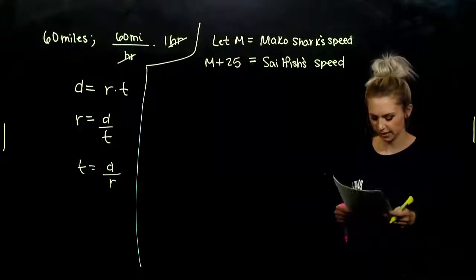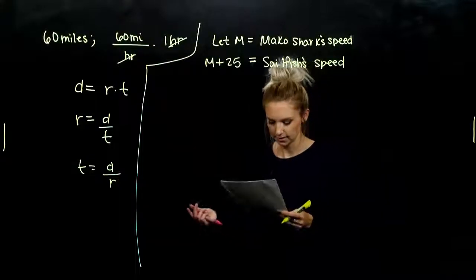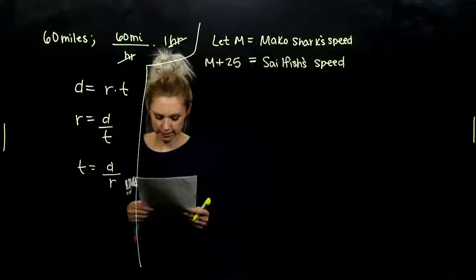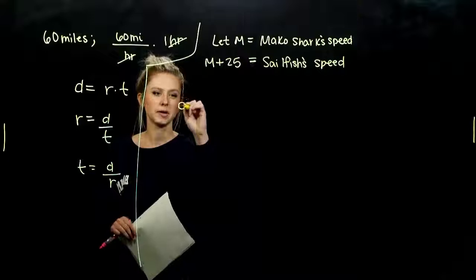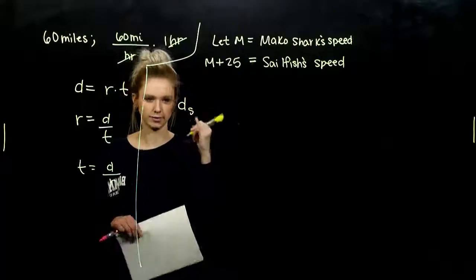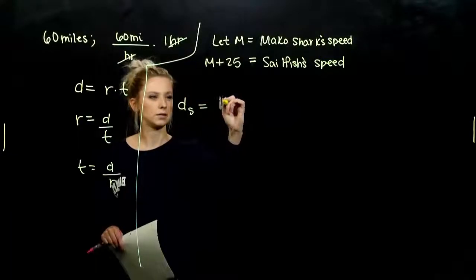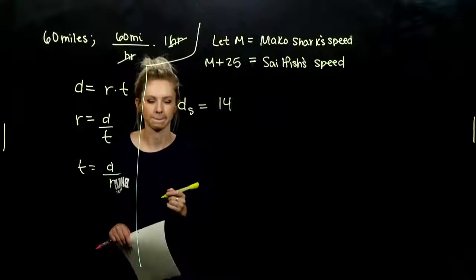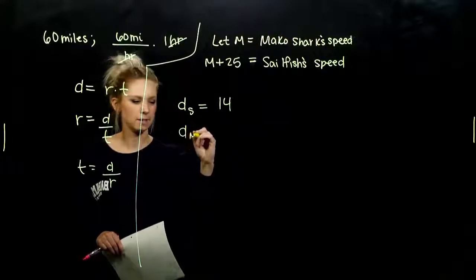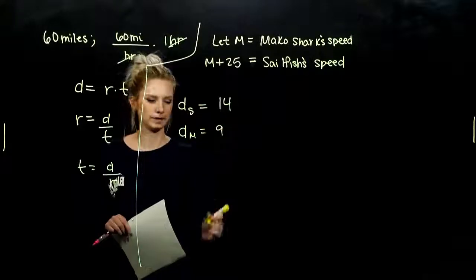And what other information do we have? We have information about their distances. Sailfish can swim 14 miles. So I'm going to label the distance of the sailfish, distance subscript s for sailfish. The distance of the sailfish is 14 miles. And the distance of the mako, how far can he travel? Nine. Nine miles.